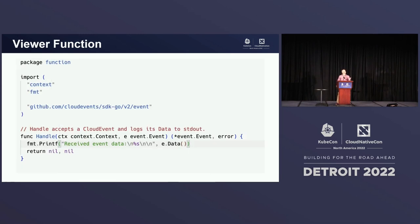The next function in this little application is a viewer function. It's even simpler than the translate function. It's written in Go, and all it does is receive a cloud event and print it to the screen. We just want to make sure that everything works. In a real application, you're going to do something a little bit more interesting.